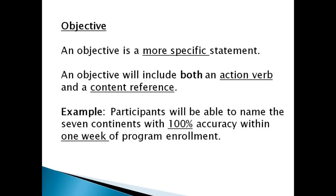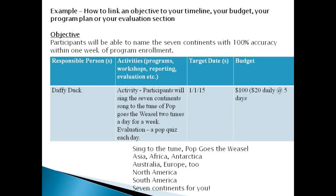Whereas your objective is a more specific statement. An objective will include both an action verb and a content reference. For example, participants will be able to name the seven continents with 100% accuracy within one week of program enrollment. So we know exactly what the participants should be able to do — we have a measurement and a timeframe. So your objective is more specific.